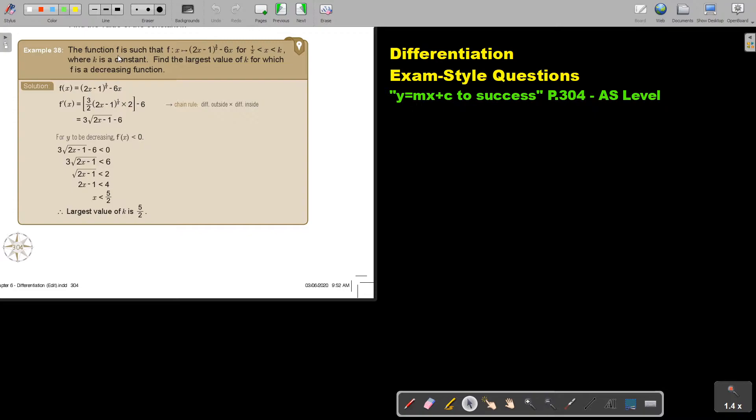The function f is such that, and there is the function, for x is bigger than a half and smaller than k, where k is a constant. Find the largest value of k for which f is a decreasing function. Okay, there's the function.